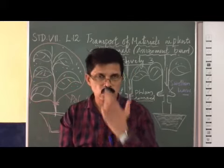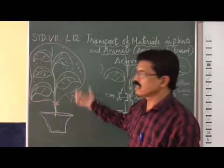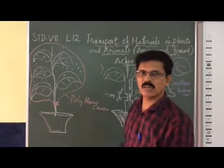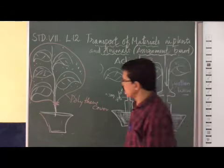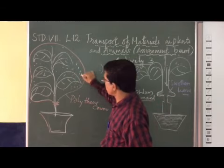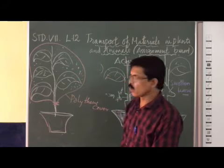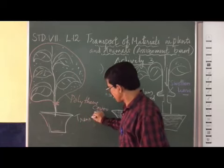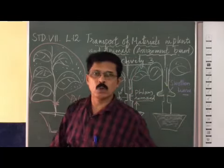The plant performs photosynthesis in the sunlight, and as a result water is given out through transpiration. The water droplets attach to the interior of the polythene bag. This indicates that plants perform transpiration. These three activities — on xylem transport, phloem transport, and transpiration — you can do at home. Thank you.